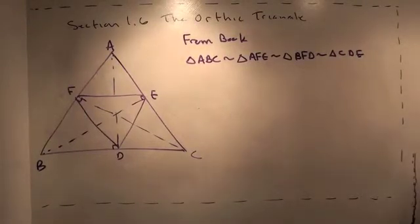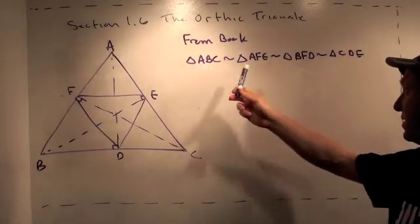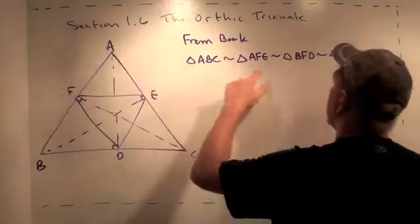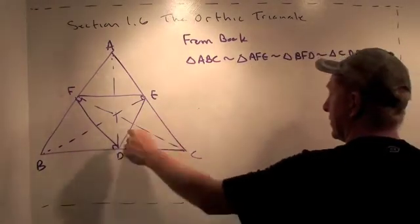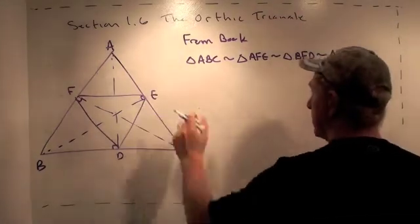Back with a slightly less complicated picture. The first exercise in the book says to show triangle ABC is similar to triangle AFE, similar to triangle BFD, and similar to triangle CDE.